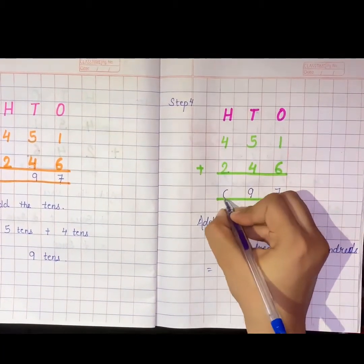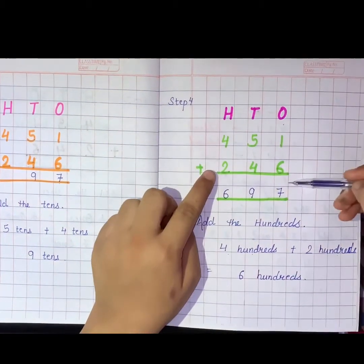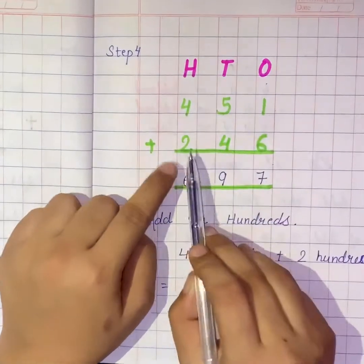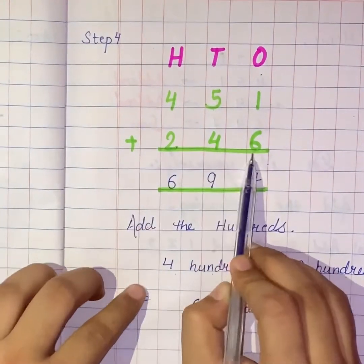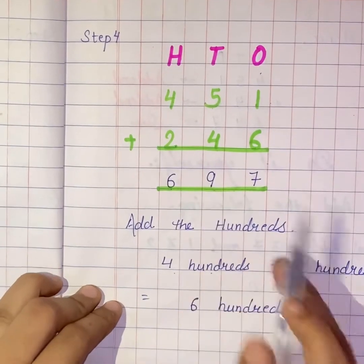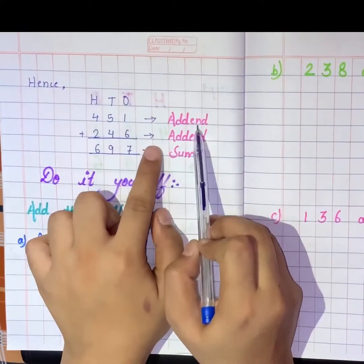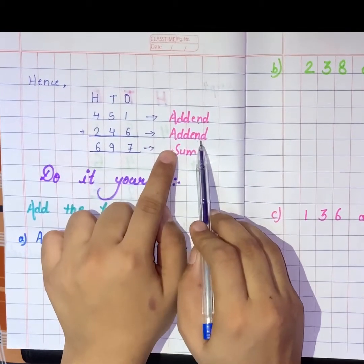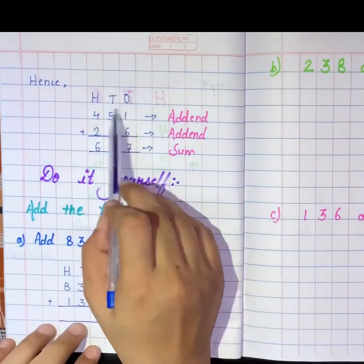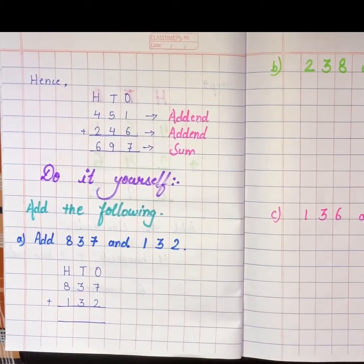So we get 6 hundreds. When we add 451 and 246, we get 696. This is an addend, this is also an addend, and 696 is the sum of these two addends.